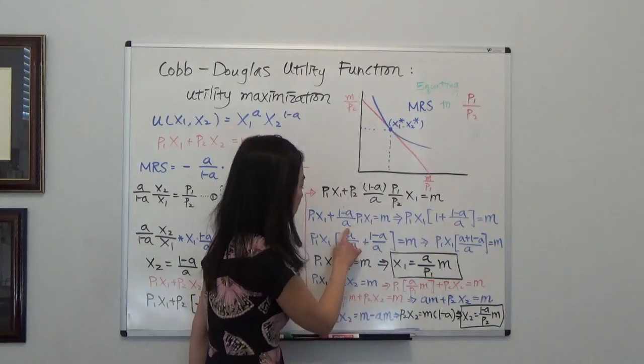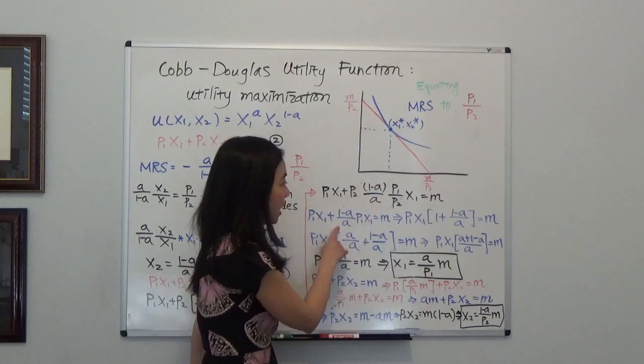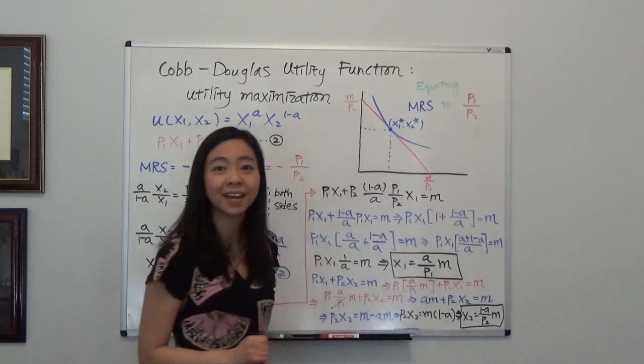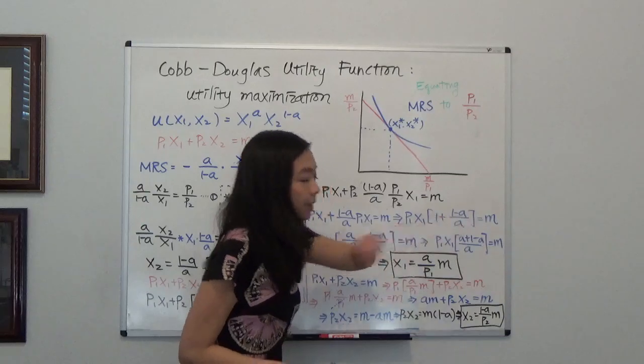And the second term, when I pull out p1x1, I'm left with 1 minus a divided by a. And the whole term is equal to m. And the rest really is just algebra.